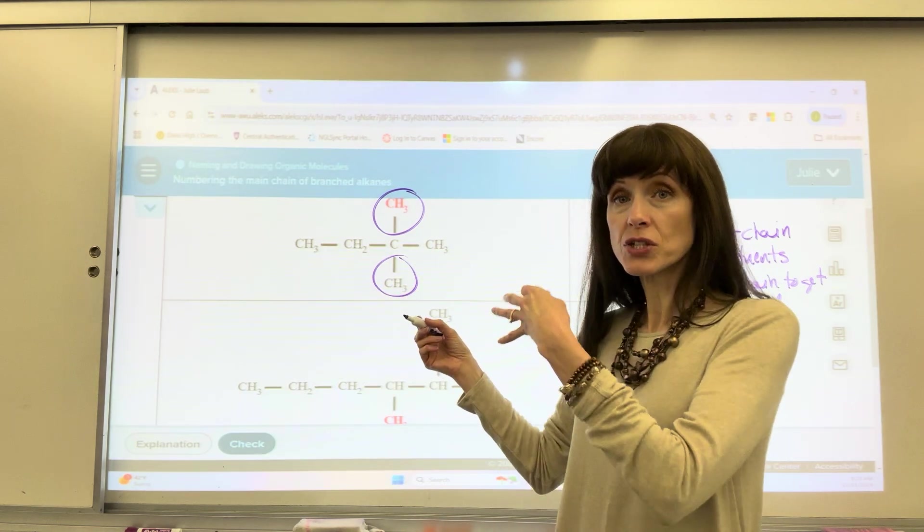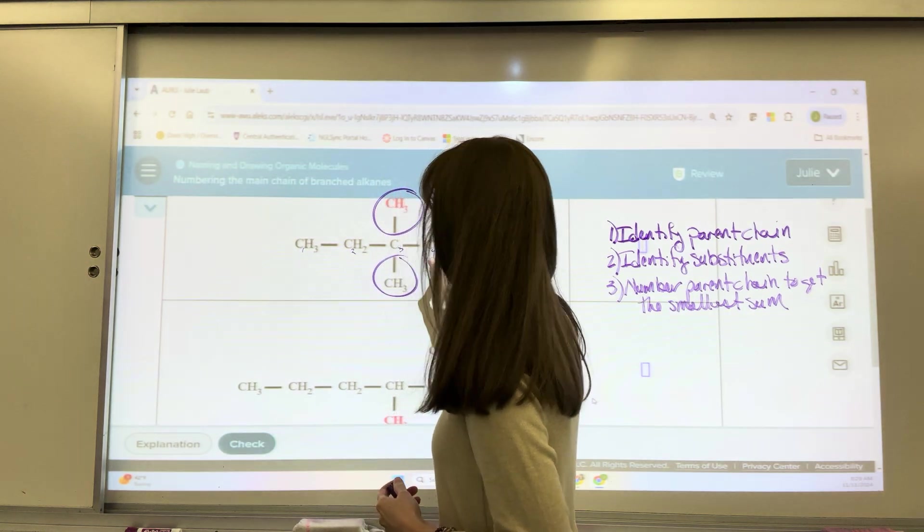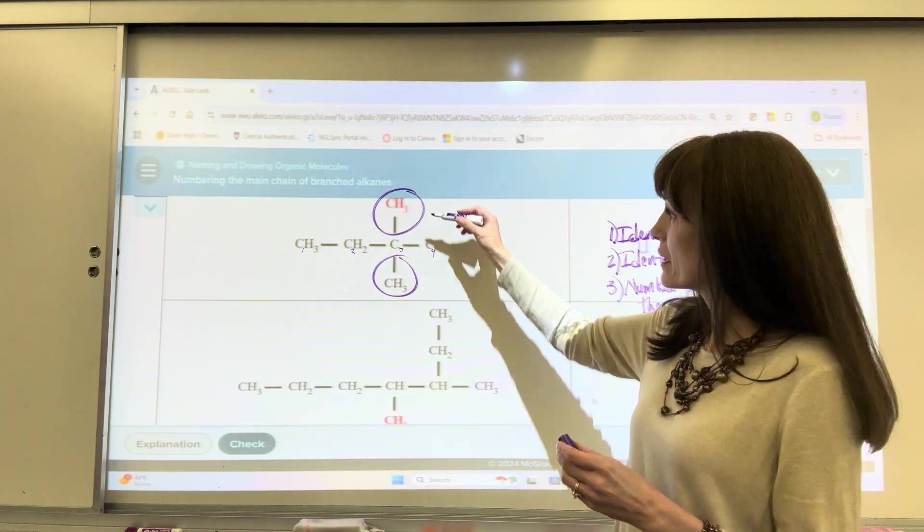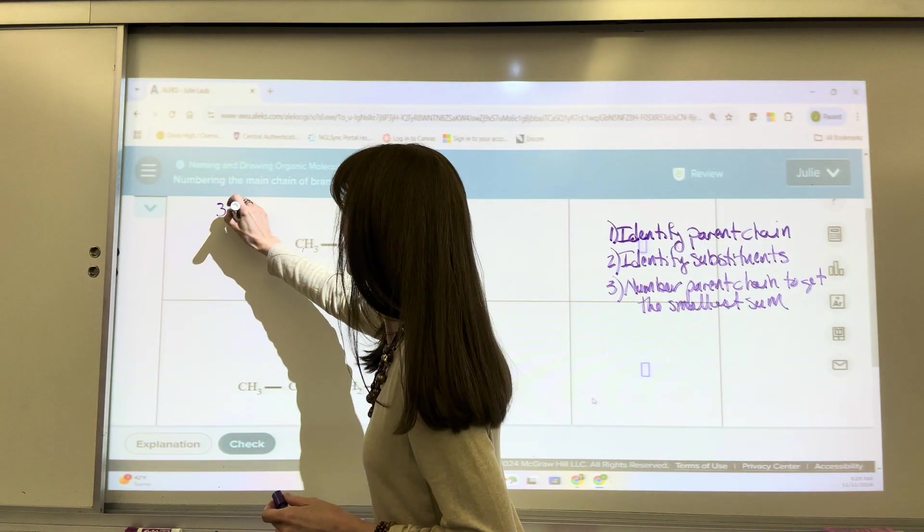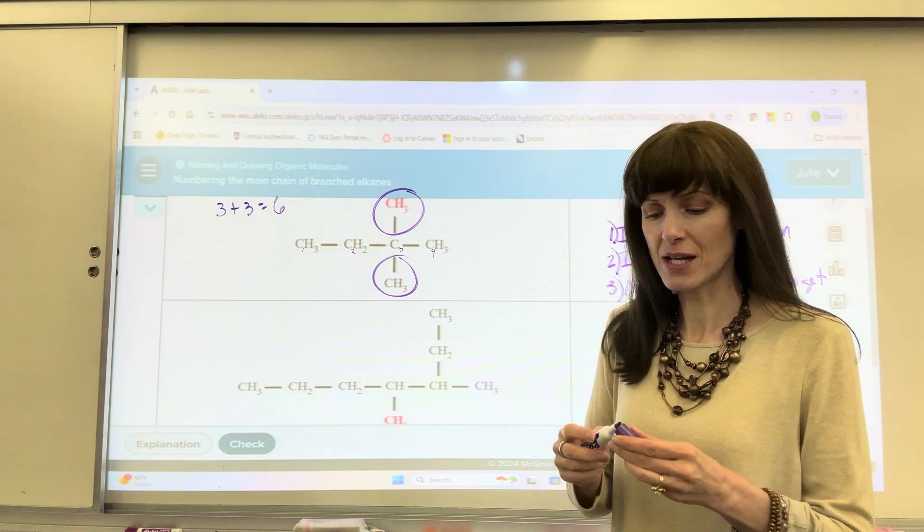We can go left to right, which would be 1, 2, 3, 4. If we do that, the two methyl groups are on the 3 plus the 3 carbon would give me a sum of 6 for their locations.